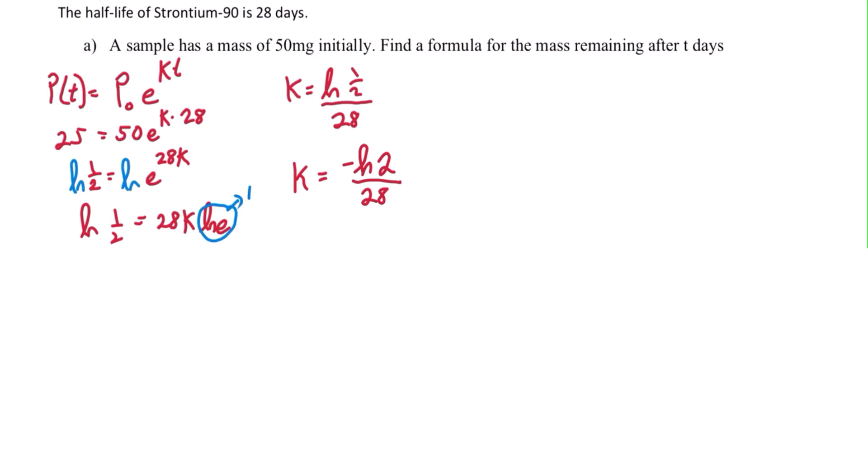So now p of t is equal to the initial value 50 times e to the k negative ln of 2 over 28 t.